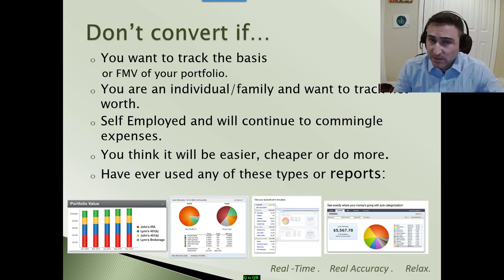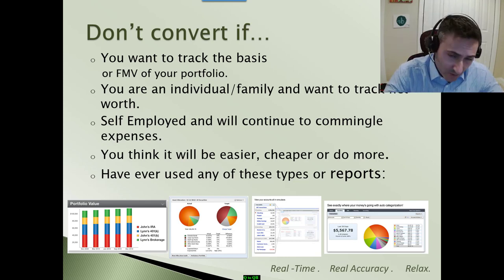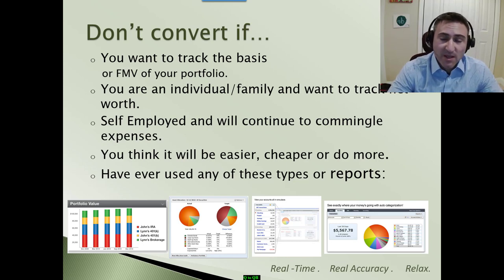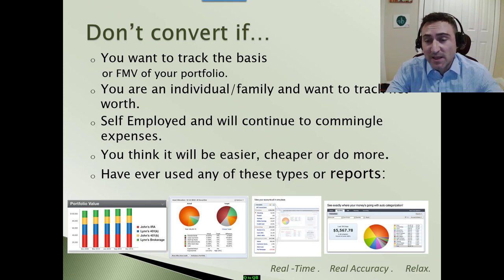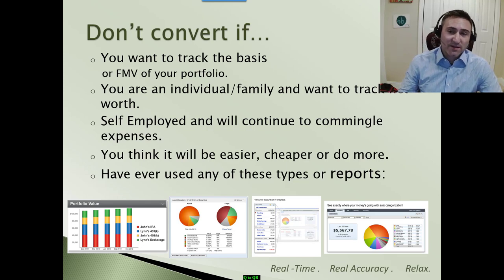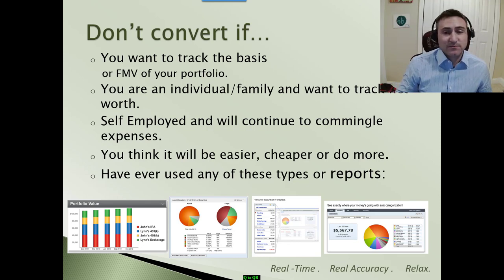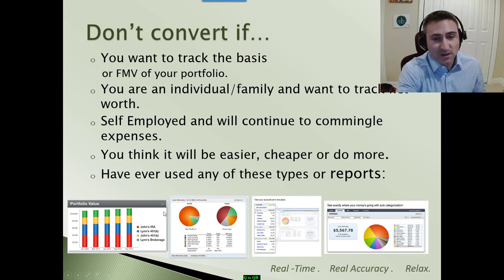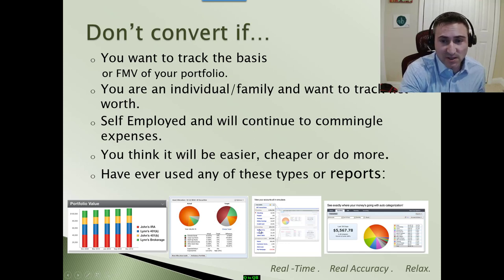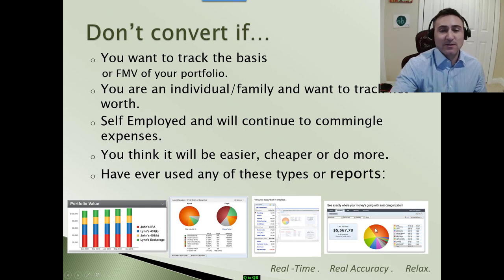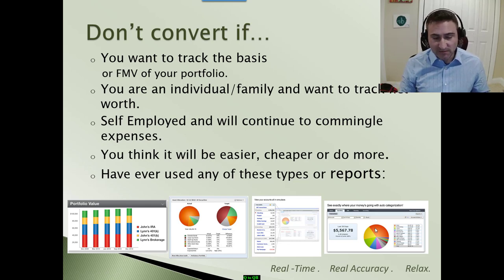If you think it will be easier to switch from Quicken to QuickBooks, I would disagree with that statement. I do not believe it will be cheaper. And if you think it will do more — again, it's not do more, it's just do things differently, so you have to be very careful with that. QuickBooks does not do everything that Quicken does. If you've used any of these reports — a portfolio value, an asset allocation pie chart, a net worth statement, or another chart or trending of how or where you spend your money — these are all reports and beautiful graphics that Quicken will be the better product for.